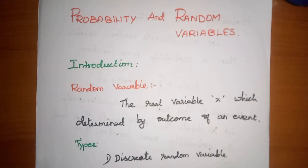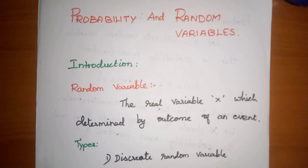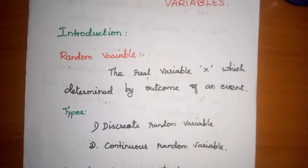Now let's look at random variables. A random variable is how you choose a value randomly — you cannot say exactly what value will occur; it may or may not happen. A random variable has a particular definition: it is a real variable determined by the outcome of an event. For example, take a coin toss — the outcome determines the random variable.